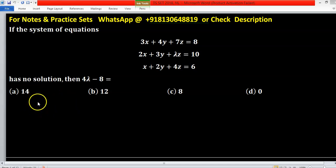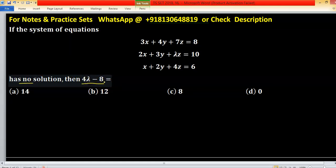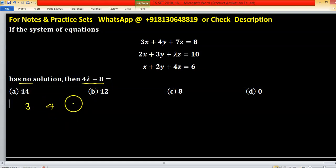In this problem, we have a system with no solution, and we need to find a value. First, write the matrix representation for this system. The first row will be 3, 4, 7, 8. The second row is 2, 3, lambda, 10.